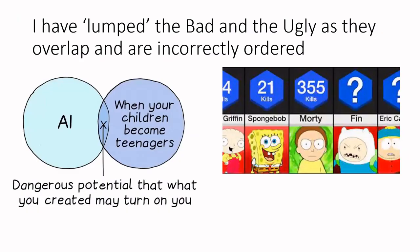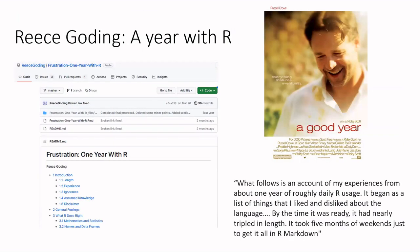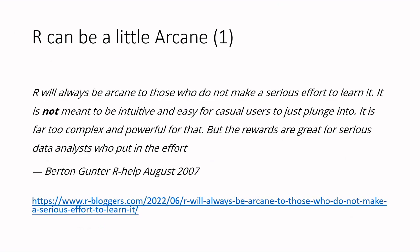So let's look at the bad and the ugly. I've lumped them together as they overlap, like AI and children becoming teenagers. They're also incorrectly ordered — it should be the good, the ugly, and the bad, much like cartoon characters ordered by kills. I came across a really nice blog by Rhys Godding — 'A Year With R' — where he is a programmer coming to R and spent a lot of time talking about his experiences. I shamelessly stole from him for some of the bad and the ugly.